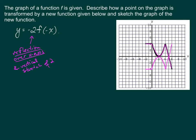Now we need to stretch it out vertically by a factor of 2, in blue. A vertical stretch of 2 will stretch this graph out vertically, multiplying all y-values by 2. These y values are negative 4, so that puts us at negative 8. This y value is still at 0. This y value of negative 4 stretches to negative 8. This positive 4 y-value stretches out to positive 8. Now we are at the blue graph.